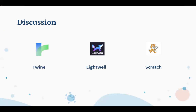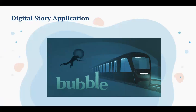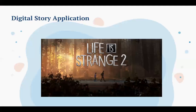In the discussion part, I will introduce software and applications of interactive storytelling. Twine, Lightwell, and Scratch are software for the creation of interactive storytelling. The first example application is Bubble, where people under extreme environmental conditions have to breathe in a bubble. Through the interactivity of the interfaces, users can get a sense of the importance of environmental protection. Another application example is Life is Strange 2, a video game of interactive storytelling. Players can make choices based on the clues provided by the game, and each decision will have an impact on two characters later in life, building empathy with their story.